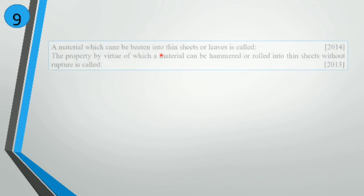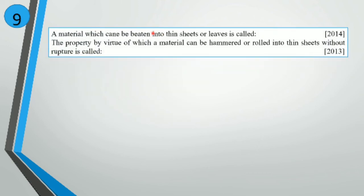A material which can be beaten into thin sheets or leaves is called a malleable material.